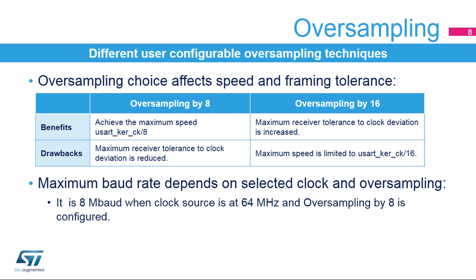The USART receiver implements different user-configurable oversampling techniques for data recovery by discriminating between valid incoming data and noise. This allows a trade-off between the maximum communication speed and noise clock inaccuracy immunity. Select oversampling by 8 to achieve higher speed up to USART KerClock divided by 8, where USART KerClock is the USART clock source frequency. In this case, the maximum receiver tolerance to clock deviation is reduced.